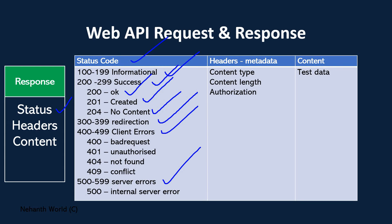400–499 are client errors and 500–599 are server errors. If the client is not requesting properly, you use 400–499. For example, 400 is a bad request — if the client needed to send some important data and it is missing, the server responds with 400. 401 is unauthorized — if you need to send an authorization token and you are not sending it, the server responds with 401 unauthorized.